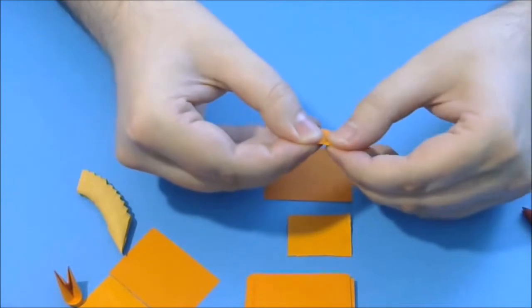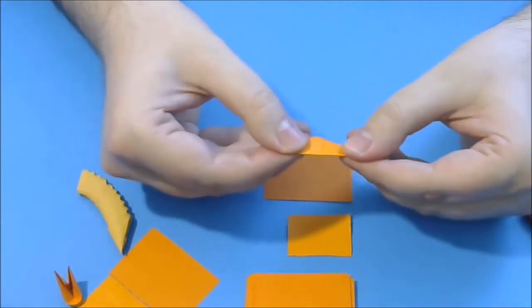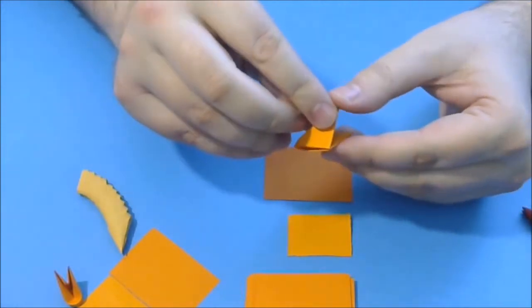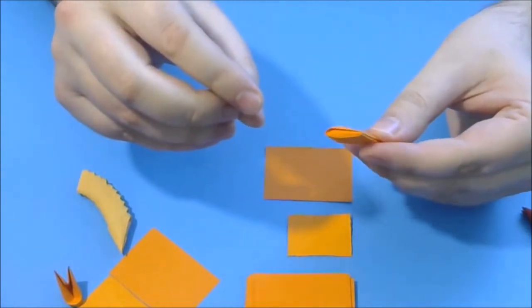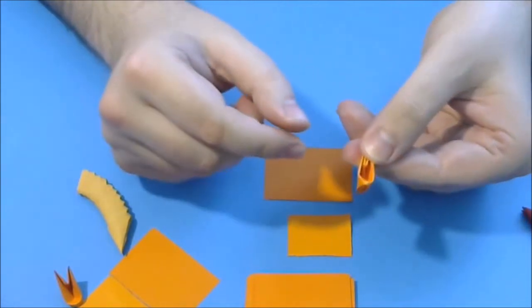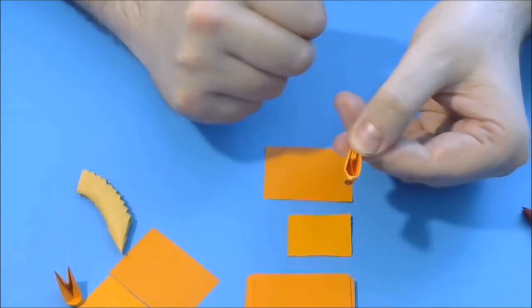The sixth step, we will fold this triangle in two on the median line like this and our 3D origami piece is almost finished.